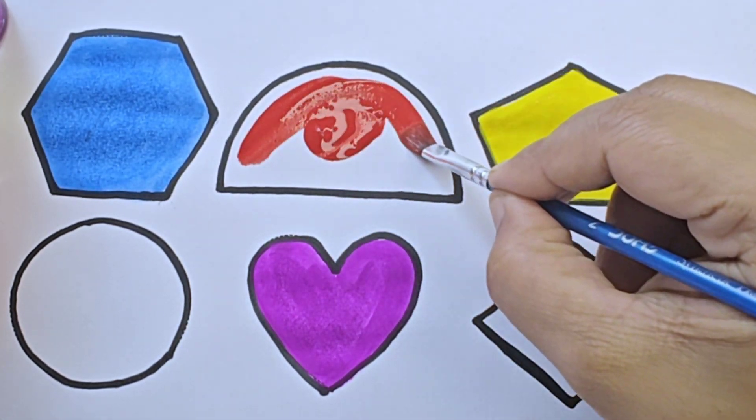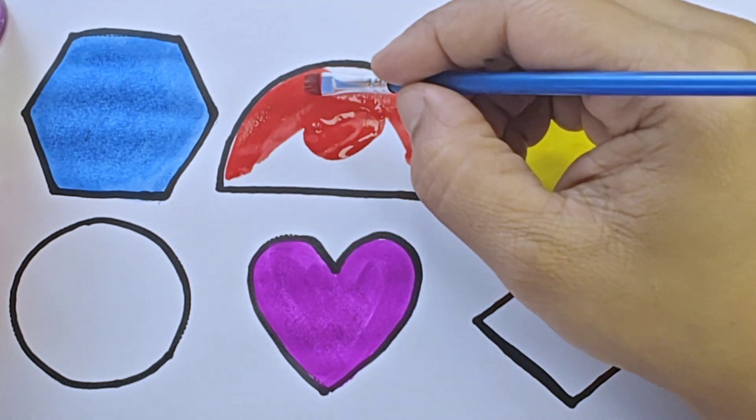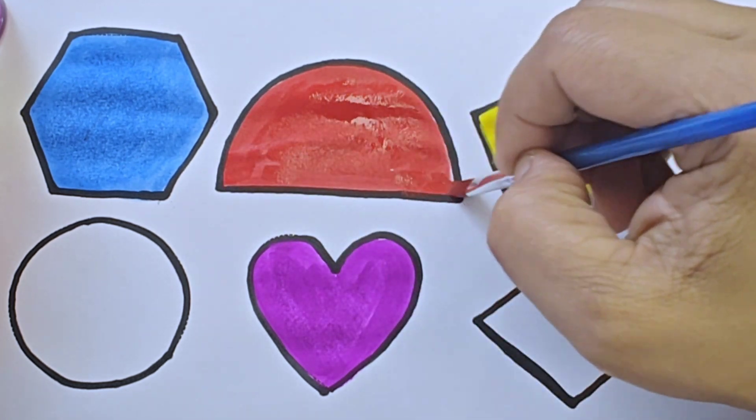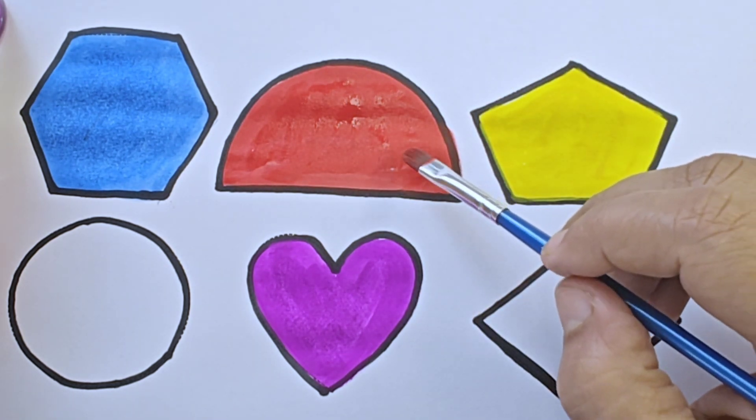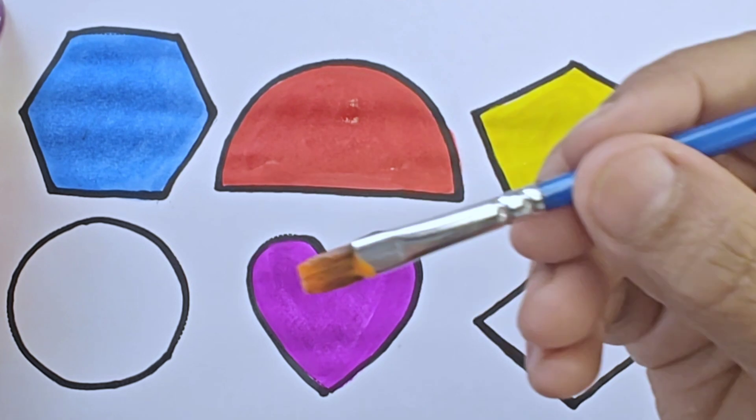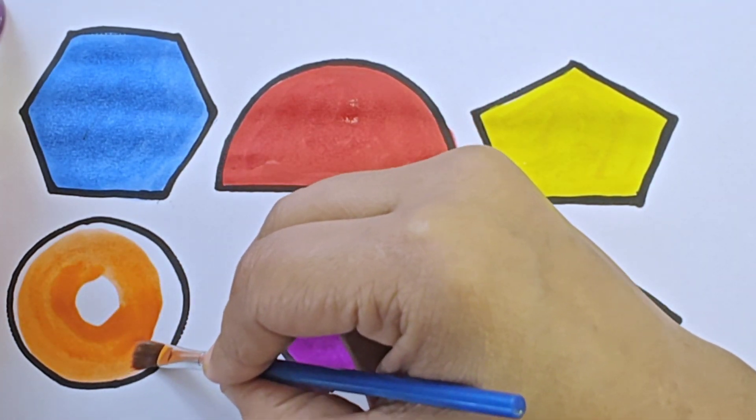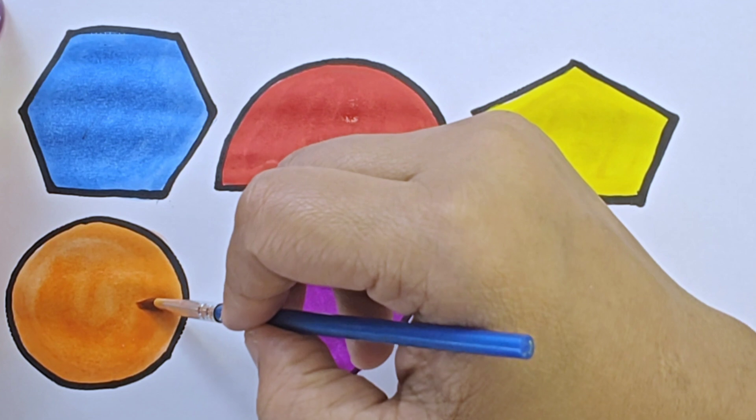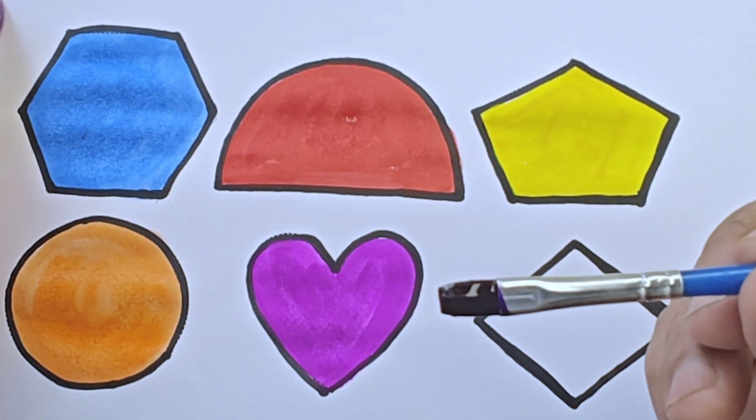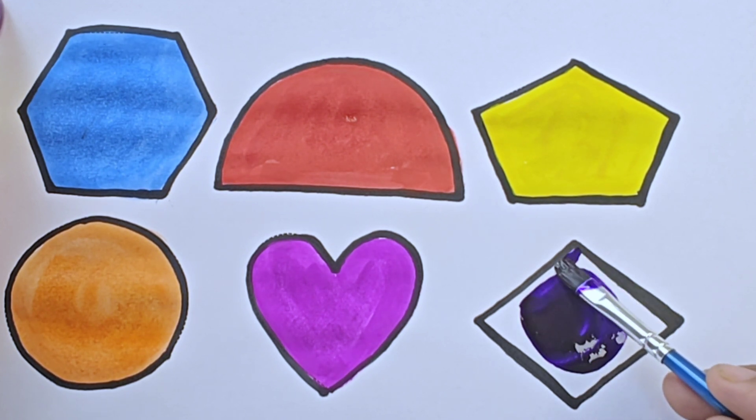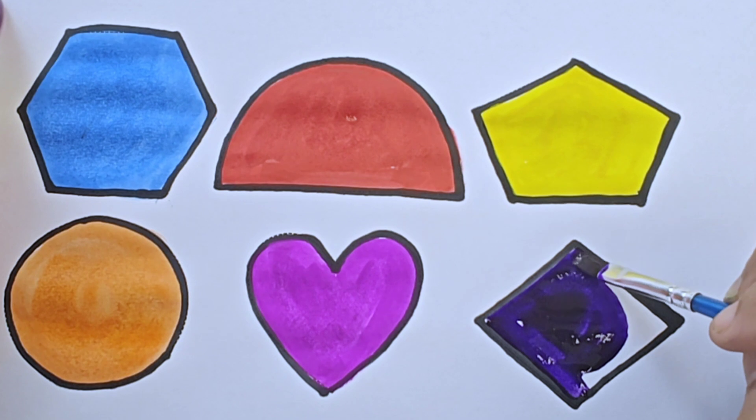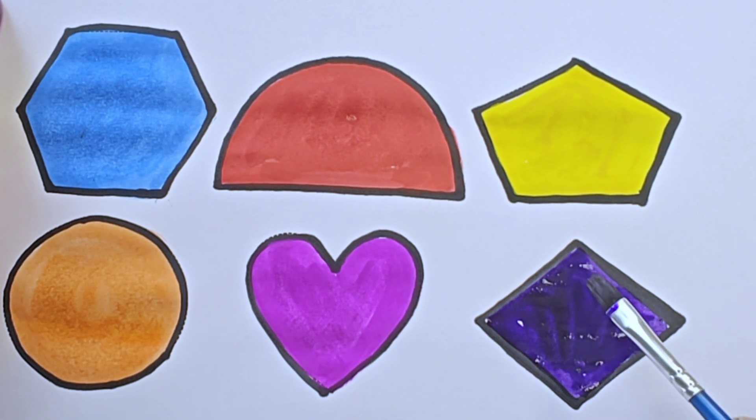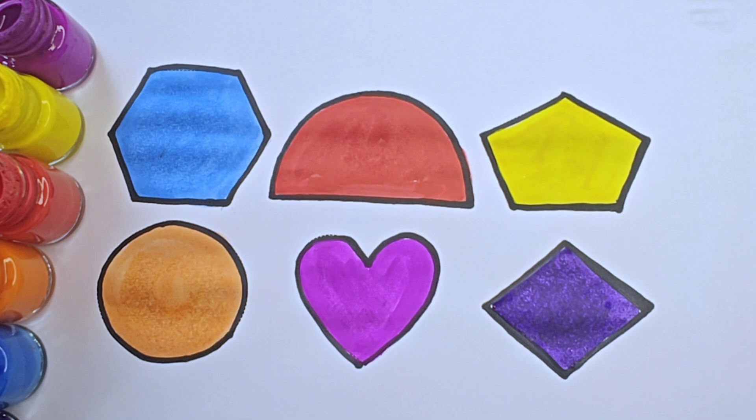It is red color. It is orange color. It is half circle or semicircle. It is yellow color, blue color. It is rhombus or diamond. It has four sides. One, two, three, four. Four sides.